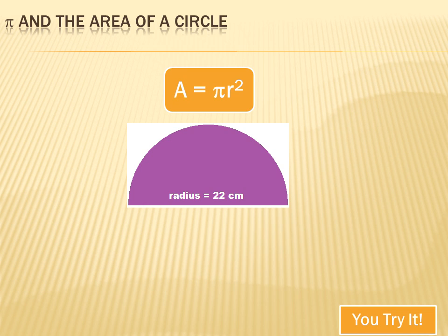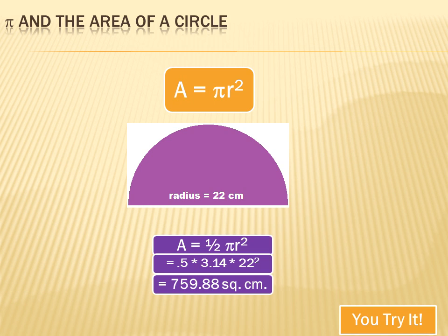This one's easy as pi. The area equals pi r squared, and that's for a full circle. A semicircle is a half a circle, so the area is going to be half whatever the area would have been for the entire circle. In this case, area equals one-half pi r squared, or one-half times 3.14 times 22 squared, which totals to 759.88 square centimeters.